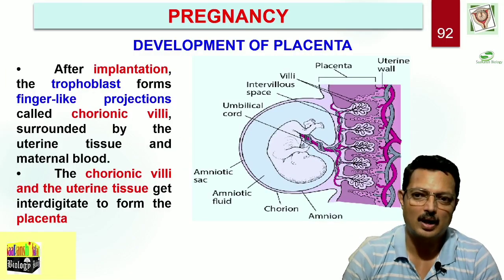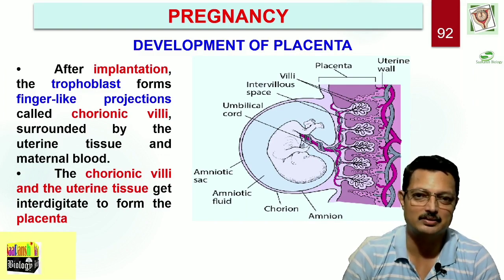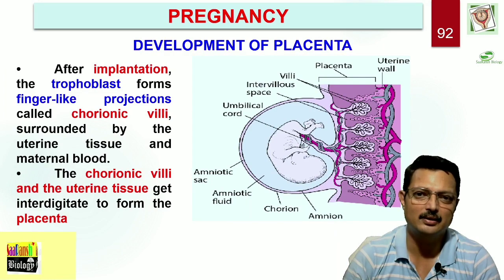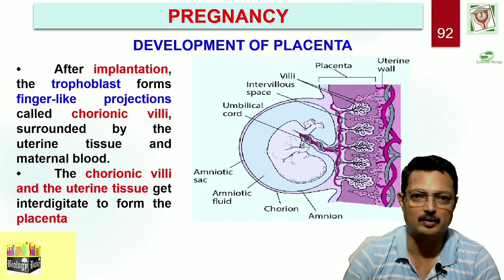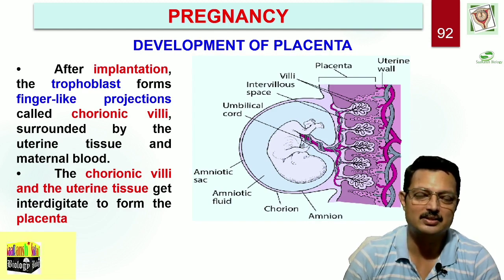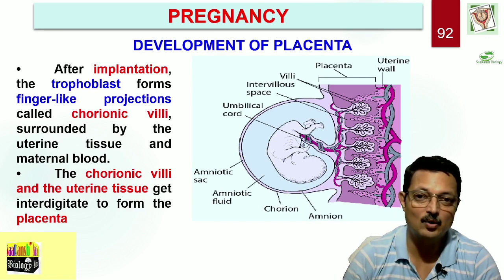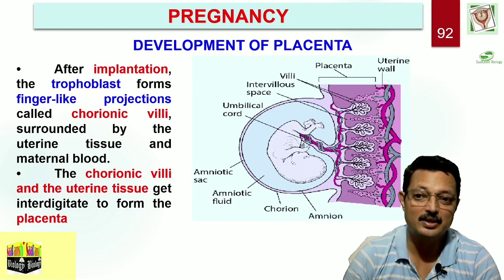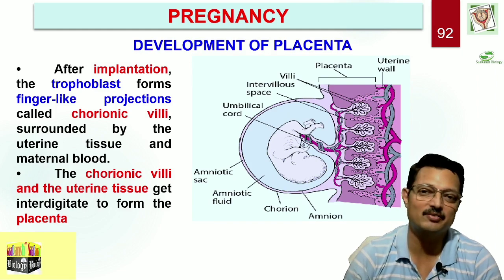Up till now, implantation has taken place — it takes around 3 days, so by the 10th day the event of implantation is over. Now, the trophoblast cells start secreting some enzymes that erode the maternal tissues, resulting in formation of finger-like projections called chorionic villi.